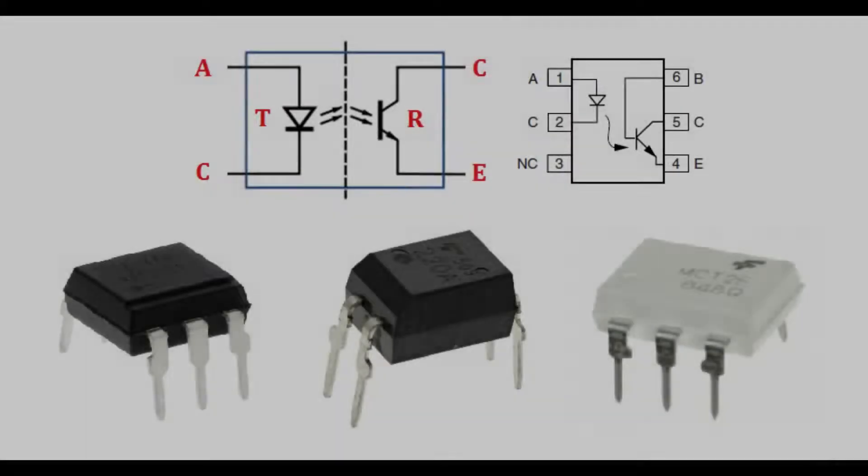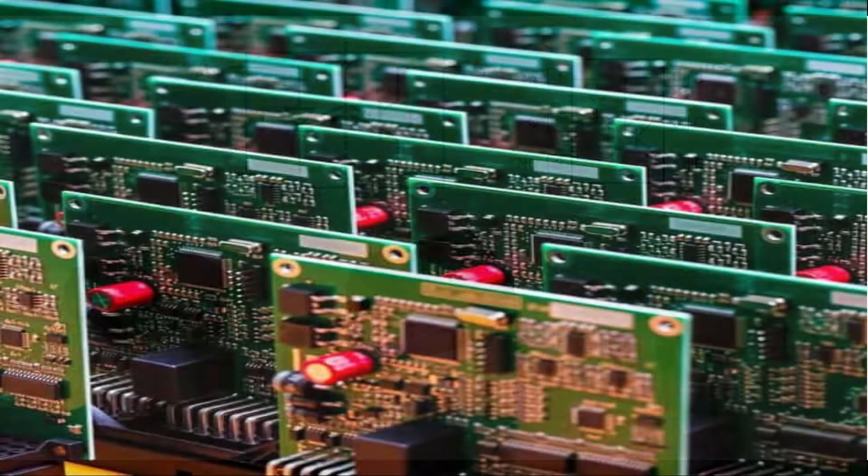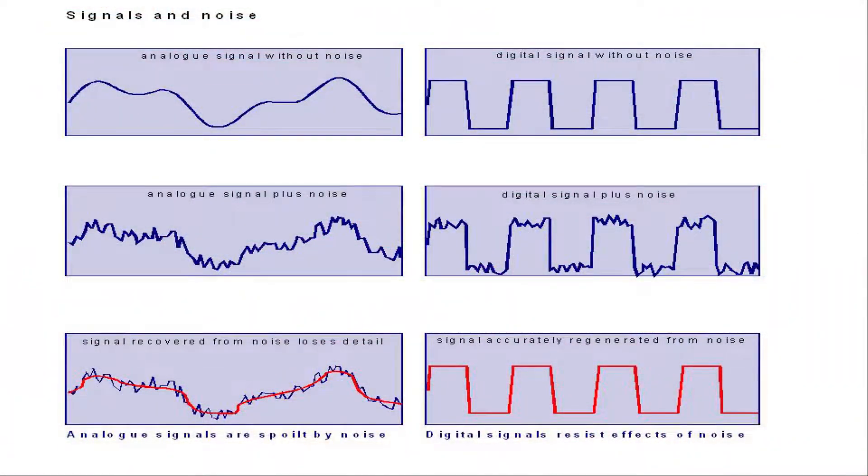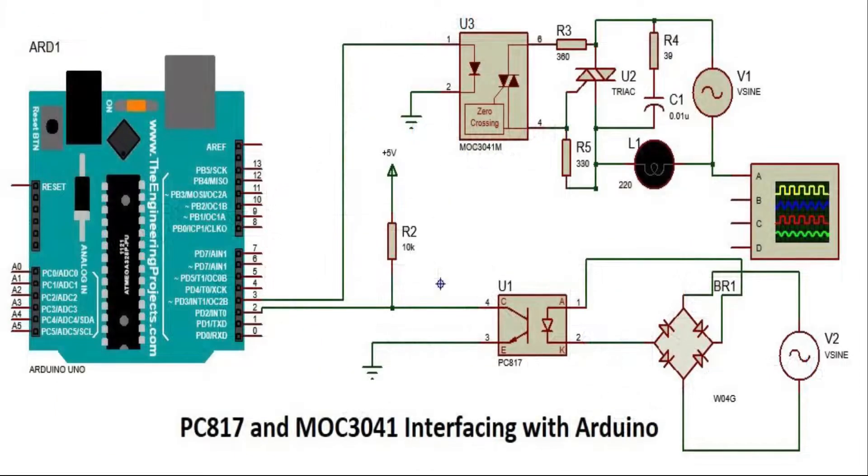Optocoupler is an electronic component that is extensively used in electronic circuit design for a variety of different applications like noise reduction, signal isolation, signal controlling, and is typically used with microcontroller and microprocessor interfacing.